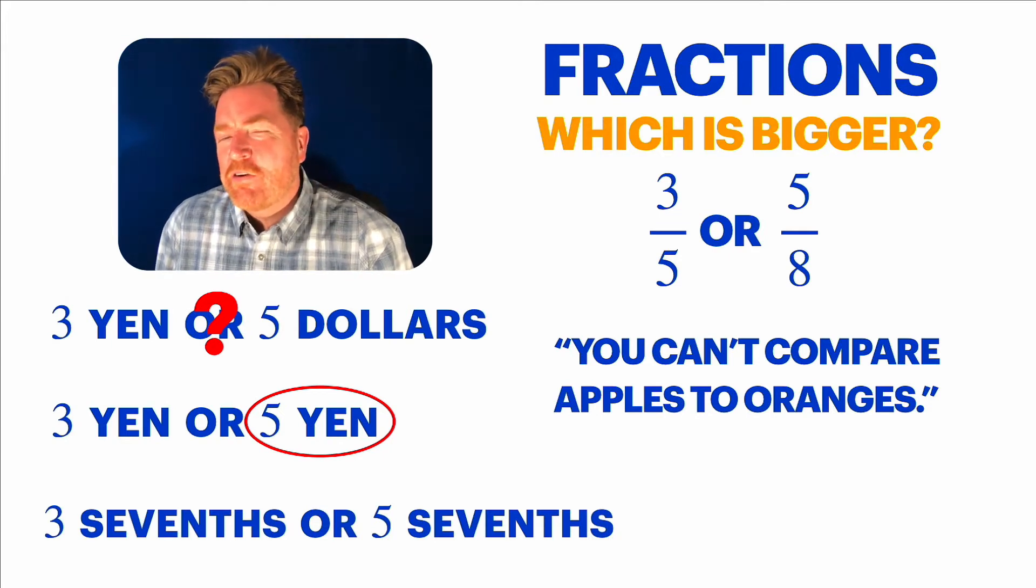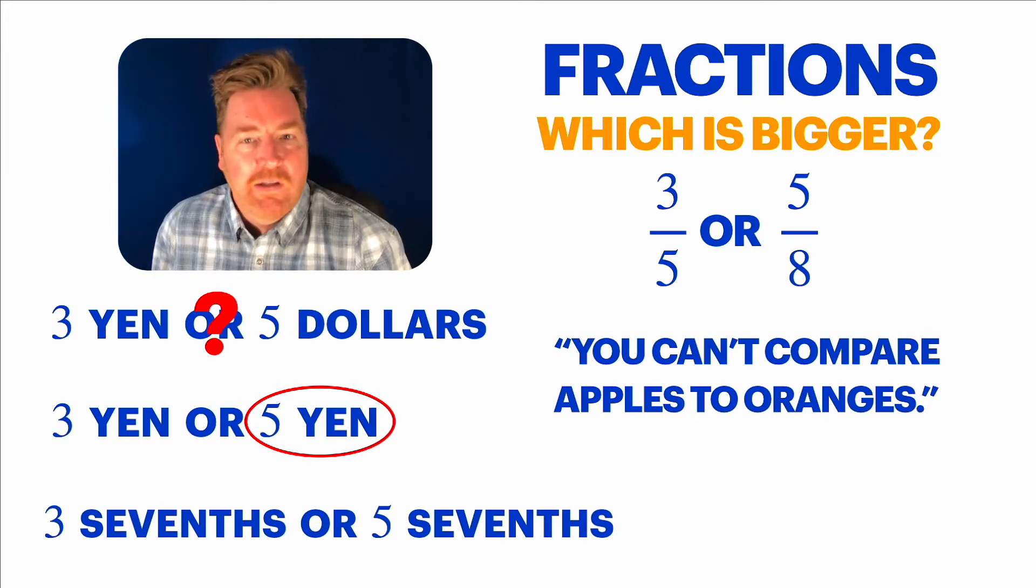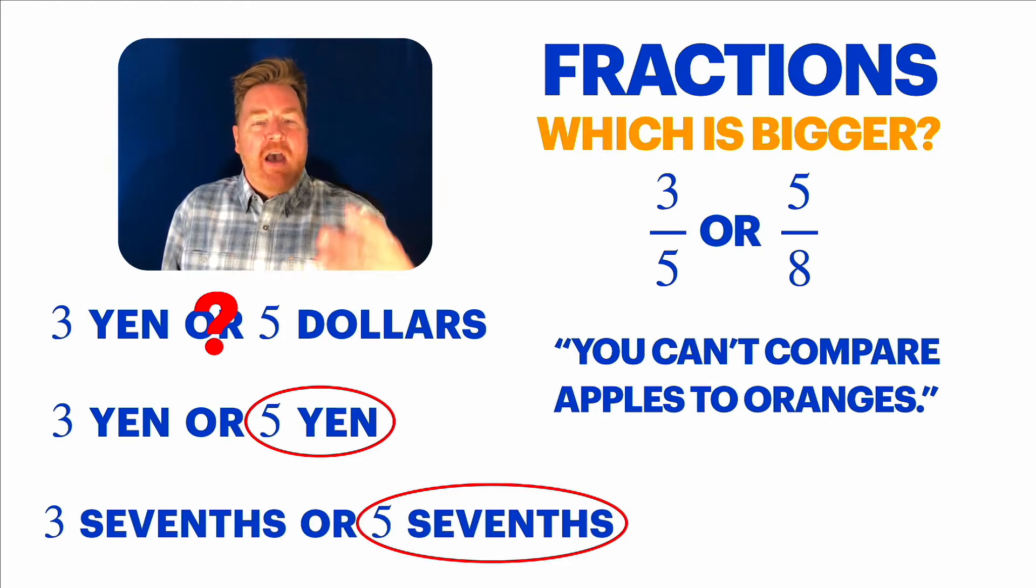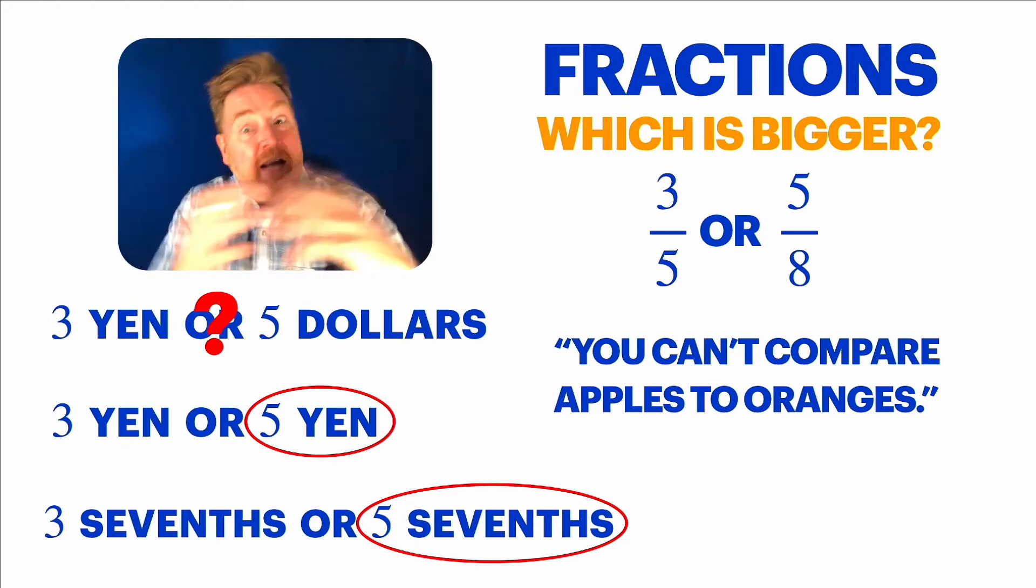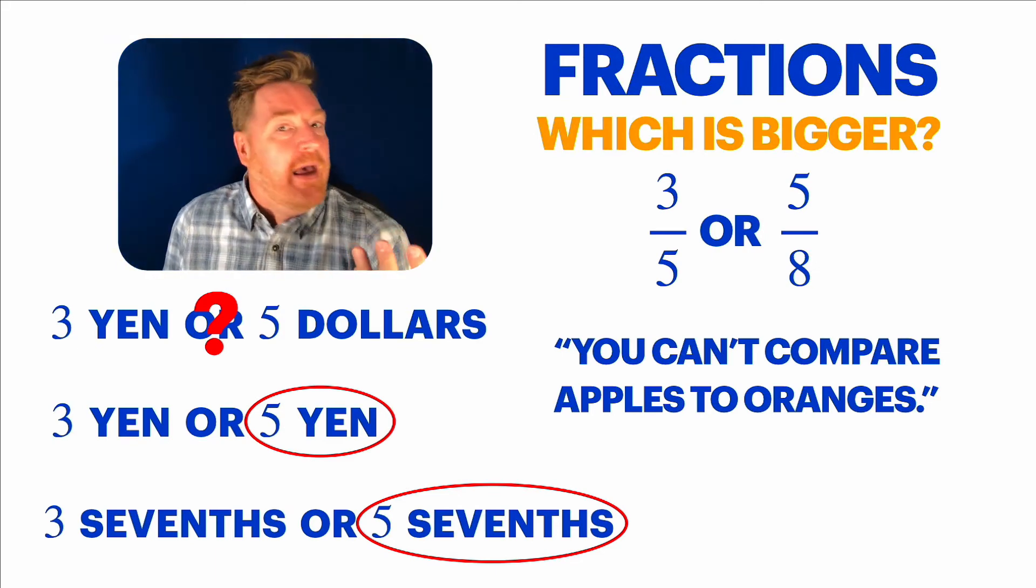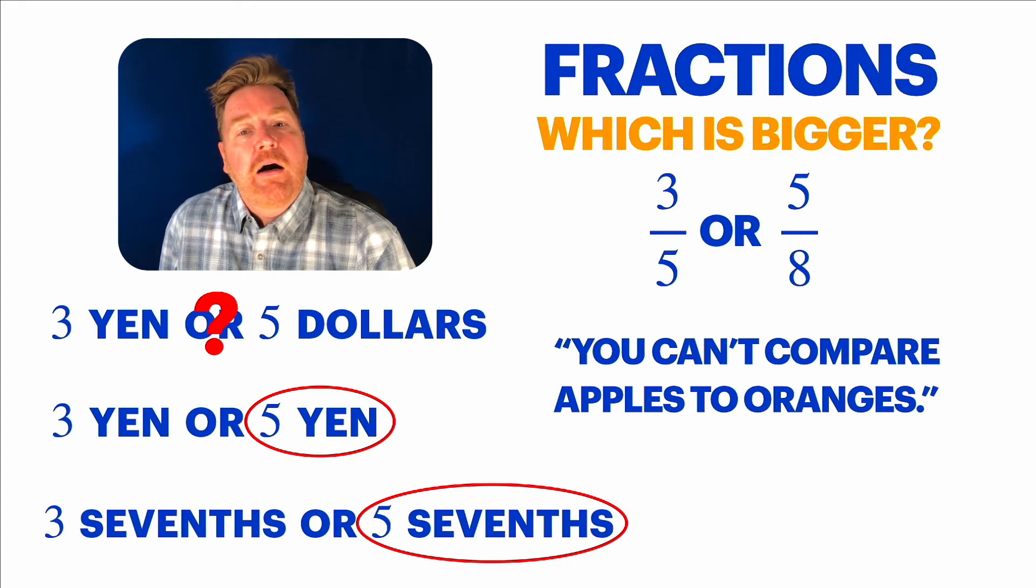Like, for example, if you wanted to say, well, what's more, three yen, three Japanese yen, or five American dollars? I don't know. I don't know how much a yen is worth or how much a dollar is worth compared to that. So, it's hard to tell. But if someone said, hey, what's more, three yen or five yen? Clearly, five yen is bigger. No problem. Same thing with these fractions. What's bigger, three sevenths or five sevenths? Clearly, five sevenths is the bigger number.